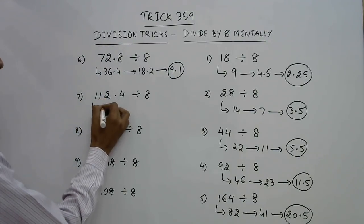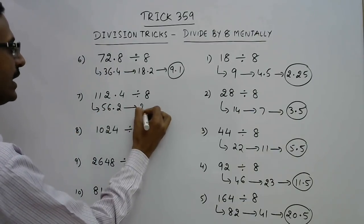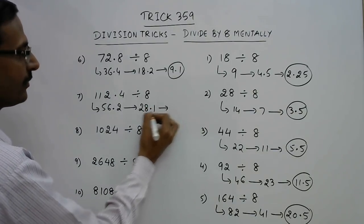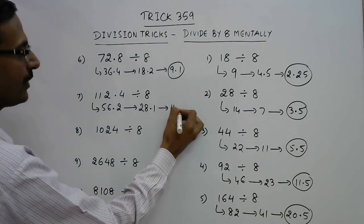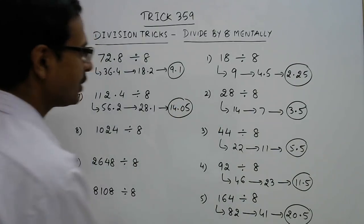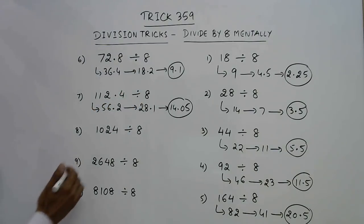112.4 divided by 8: the half is 56 and 0.4 becomes 0.2. Half of 56 is 28, 0.2 becomes 0.1. And now take the half: 14 and 0.1 becomes 0.05. So 14.05 is the quotient when you divide 112.4 by 8.